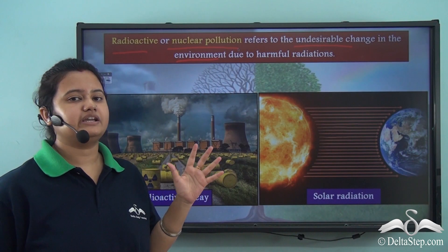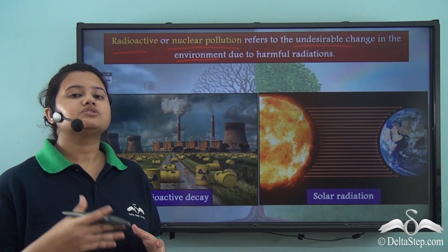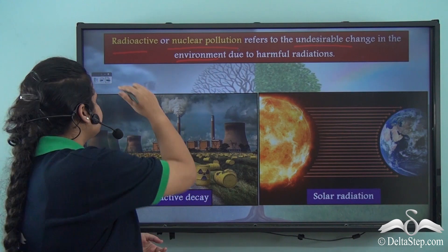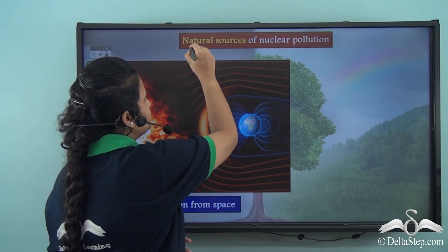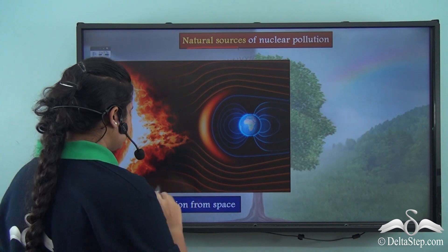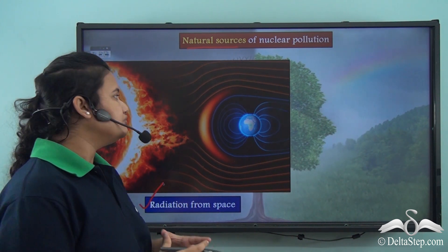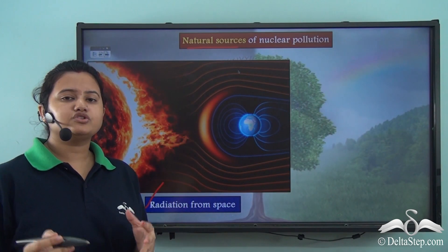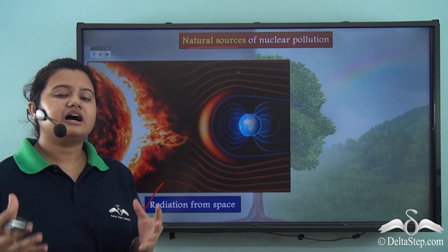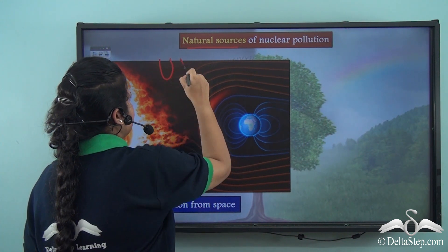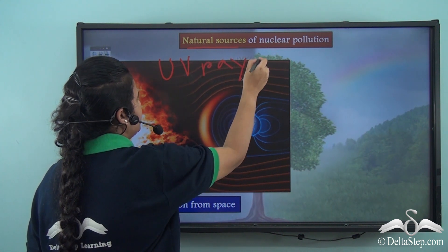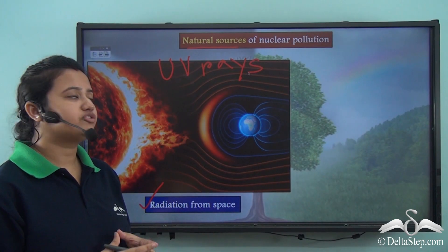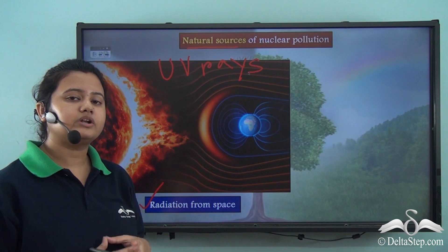Now what are the sources of this kind of pollution? The sources of nuclear or radioactive pollution can be both natural and man-made. The natural source of nuclear pollution is radiation coming from the sun. We receive a lot of radiations from the sun. A part of solar radiation — that is, ultraviolet rays or UV rays — coming from the sun are indeed very harmful and they lead to nuclear pollution. So radiation coming from the sun is a natural source of nuclear pollution.